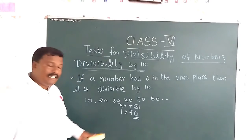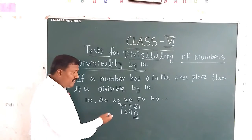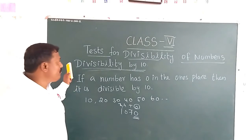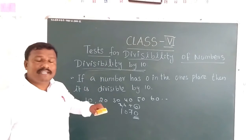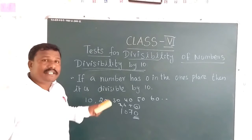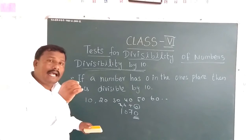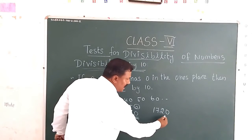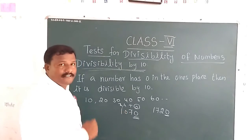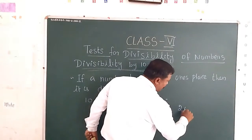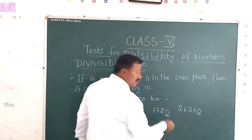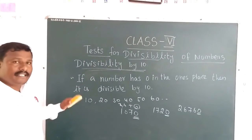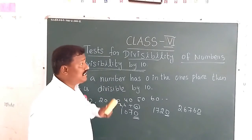So in the number 1070, the digit in the one's place is 0, so we can divide by 10. I hope you understand divisibility by 10. Any number that has 0 in the one's place is divisible by 10. For example, 1720 — in one's place, 0 is there, so we can divide by 10. Then 26730 — in one's place, 0, so we can divide by 10 easily.